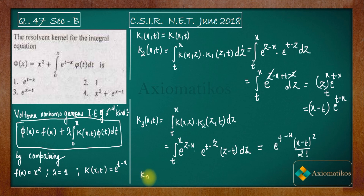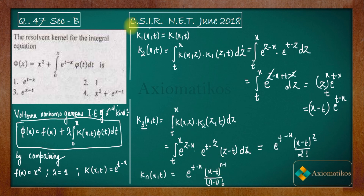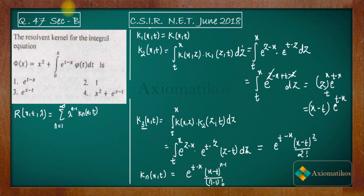Using these results, we can get a general idea about kn(x, t). It will be e^(t − x) · (x − t)^(n−1) / (n−1)!. Since when n = 3 we get power 2 and 2 factorial, the pattern gives us n minus 1 over (n−1) factorial.